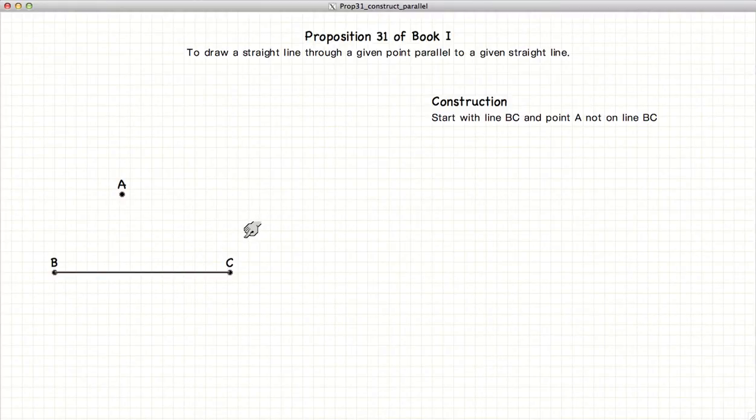So the first thing we're going to do is find a point on BC anywhere and label it D, and draw a line from A to D.